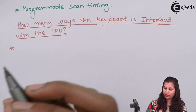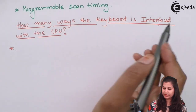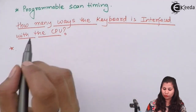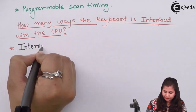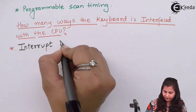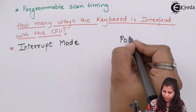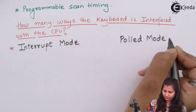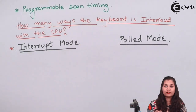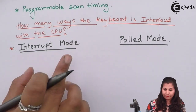There are two modes or two ways in which the keyboard is interfaced with the CPU. The first is the interrupt mode and the second is the hold mode. The function of the 8279 is to scan the keyboard and display devices.